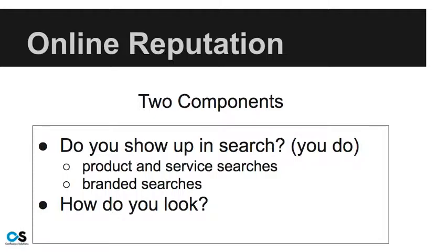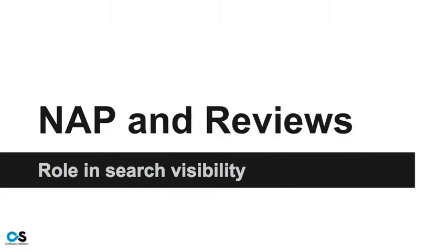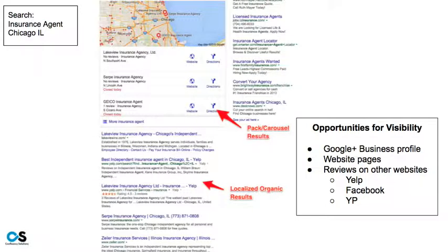There are two components to your online reputation: your visibility and presence — do you show up when people do searches? That could be a product-related search like car insurance or business insurance, or people just looking for information. Branded searches are another kind, where people are really looking for you by name. The second component is, once you do appear, how do you look? Your NAP data — name, address, phone number — and the reviews that show up online work hand in hand, playing a role in search visibility.